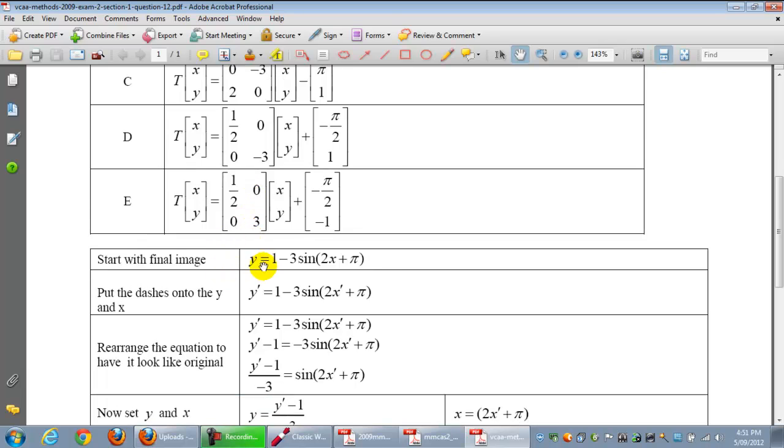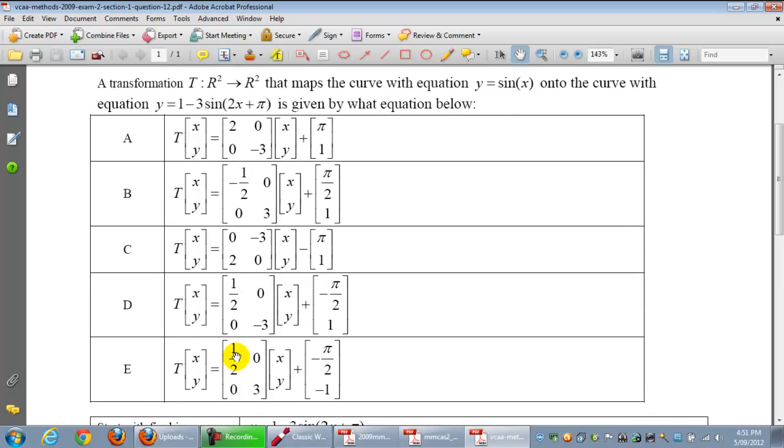We start with the final image. We're putting dashes on the y because that's the final image, y' = 1 - 3sin(2x' + π). We're rearranging that. Why are we doing that? Rearrange the equation to have it look like the original. Remember, the original equation was y = sin(x).